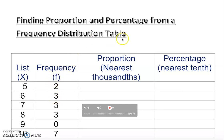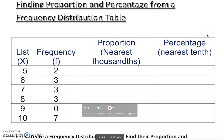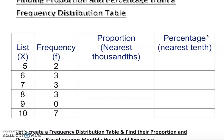This table is pre-built, so all you have to do is fill out the proportion and the percentage. Let's understand what proportion is first. Proportion is basically each frequency divided by the total number of frequencies — you leave it as a decimal. We'll need to round to the thousandth place, and I'll show you how to do that.